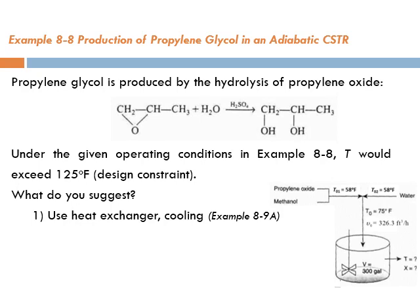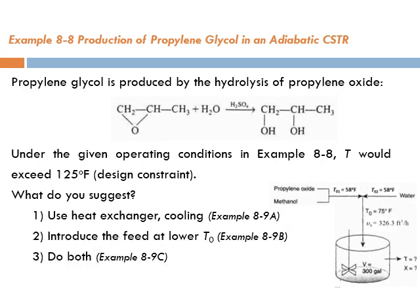Another solution is to introduce the feed at a lower T₀ — lowering the feed temperature so the temperature inside the reactor will be lower. We'll tackle this in example 8-9B. We can also do both together, which is example 8-9C. Our strategy for the coming three examples should now be clear.